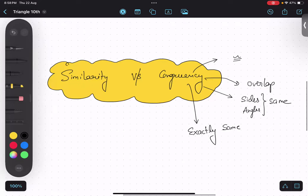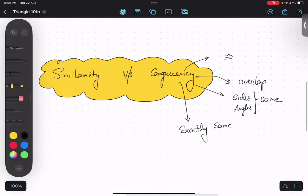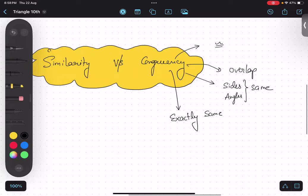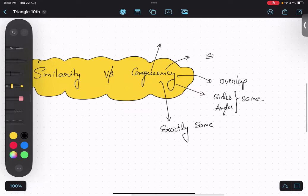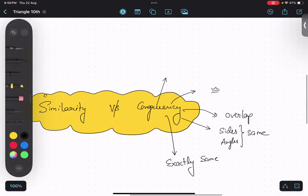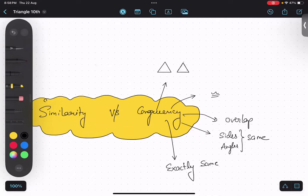Since we are talking about similarity and congruency of triangle in the chapter, I'm going to take one example to understand what does it mean to be congruent. So when we say the two triangles are congruent. So let's say this is a, b, c. This is p, q, r.